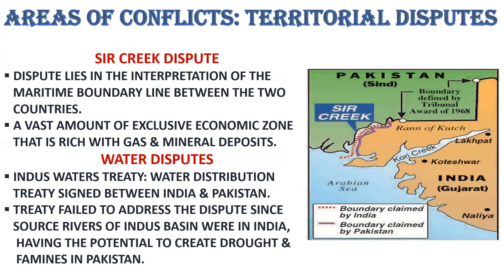The water dispute between Pakistan and India began during the early 1960s. However, the Indus Water Treaty, negotiated by the World Bank, created an understanding of how water between the two countries would be shared. There are six rivers and the treaty divided three rivers for use by each country. During the 1990s, India constructed a hydroelectric plant along the Chenab River. Pakistan says that it violates the treaty and will impact its water supply.